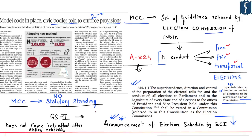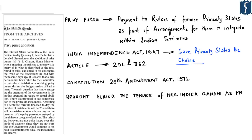This news becomes important from the perspective of polity and governance under GS Paper 2. Moving on to the next news discussion, the next news appears on page 11 from the Archives. Today's Archives mentions the abolition of privy purse.